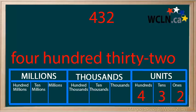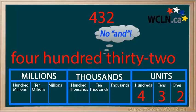Notice we do not say AND thirty-two. The word AND is saved for the decimal — that's another lesson. For now, just remember not to say AND.